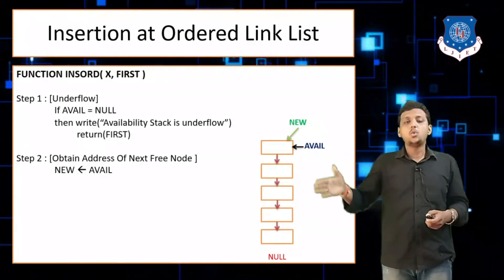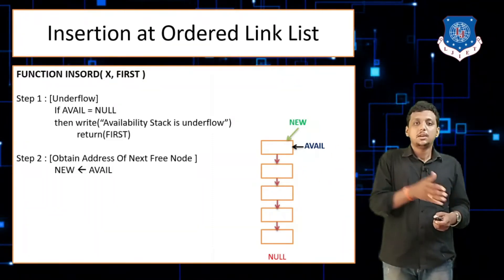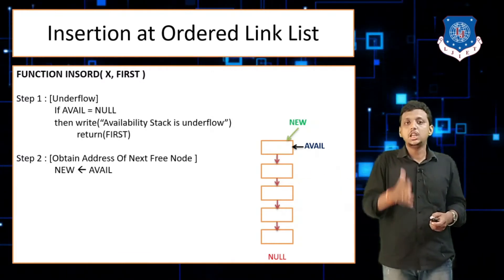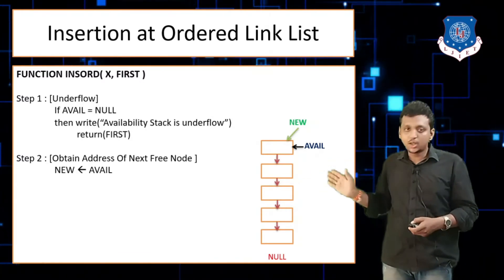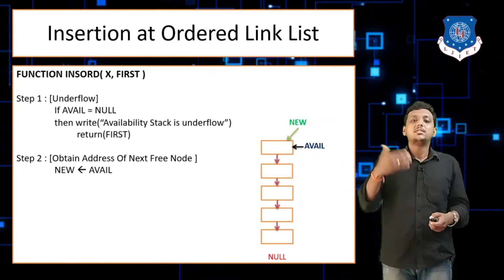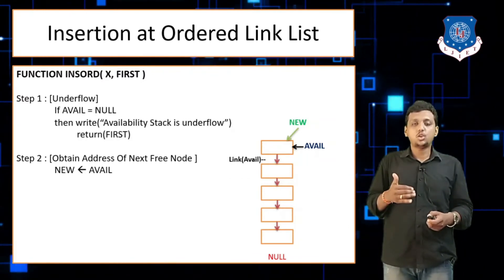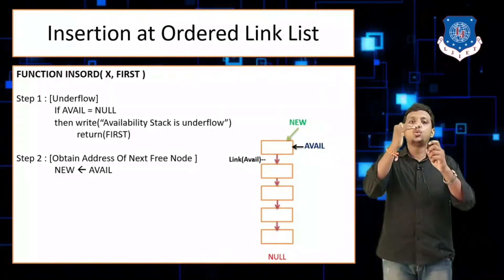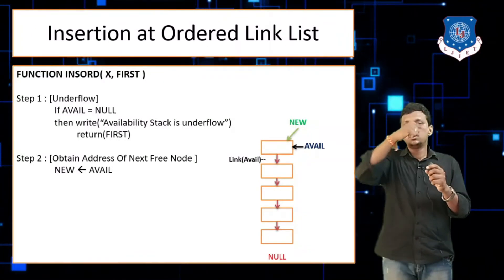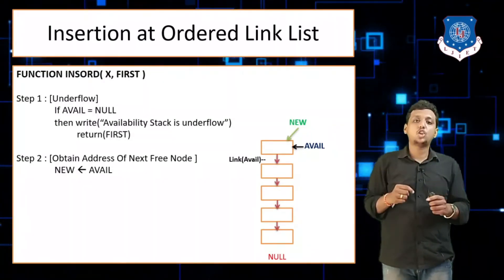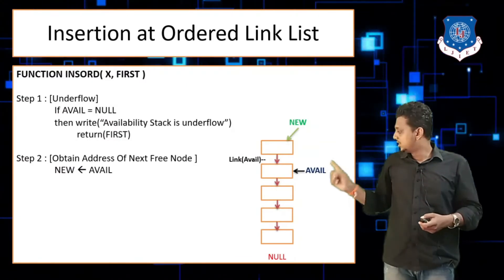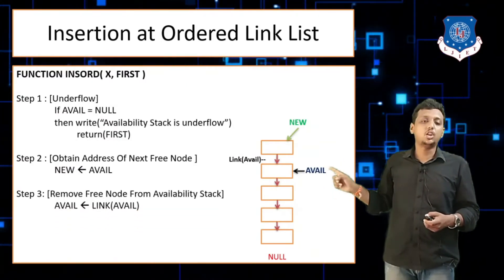Step one: assign new pointer to avail — write new arrow avail. If A points to B, you write it in the algorithm as new arrow avail. Step two: avail arrow link of avail — we move the avail pointer down because we need to take this topmost node.